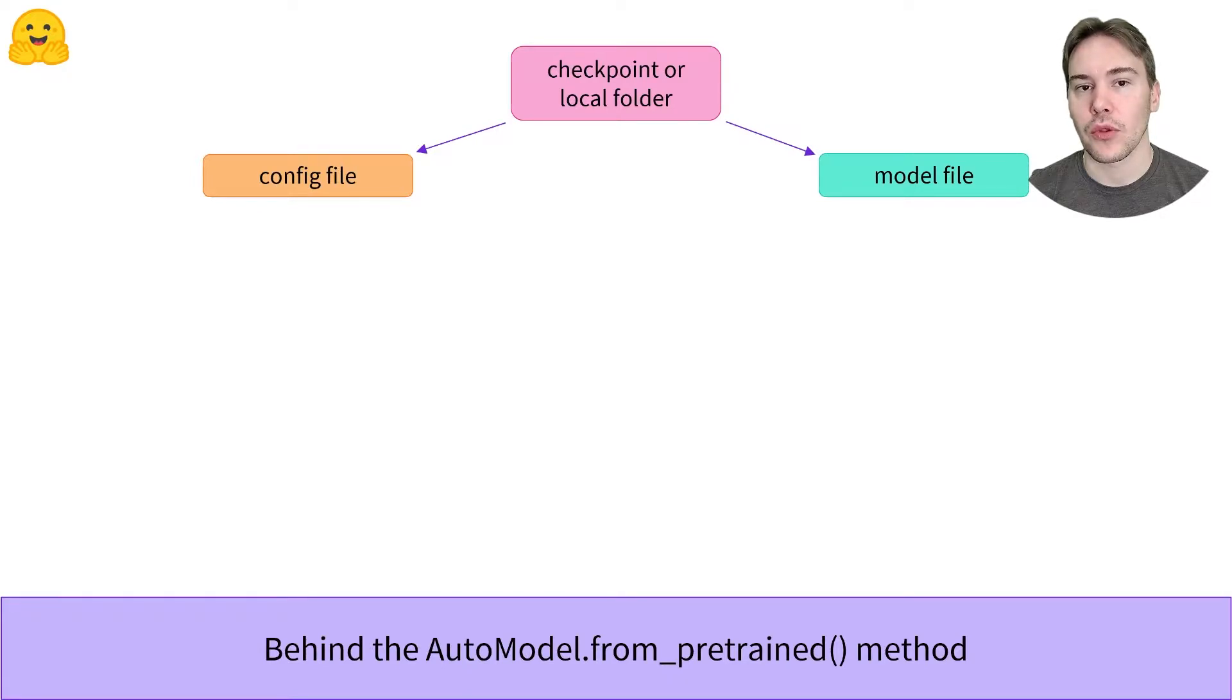To instantiate the pre-trained model, the TFAutoModel API will first open the configuration file to look at the configuration class that should be used. The configuration class depends on the type of the model—BERT, GPT-2, or BART, for instance. Once it has the proper configuration class, it can instantiate that configuration, which is a blueprint to know how to create the model.